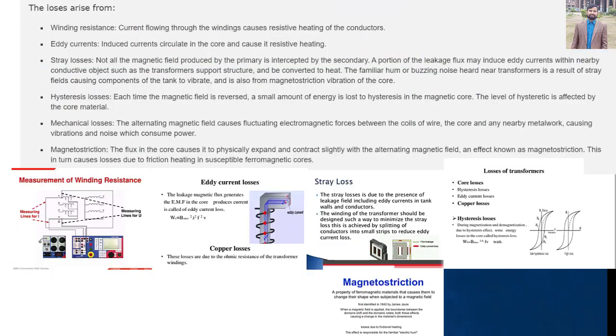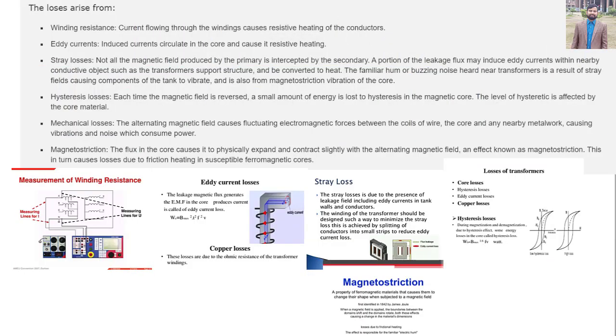The losses arise from winding resistance. Current flowing through the windings causes resistive heating of the conductors. Eddy currents: induced currents circulate in the core and cause resistive heating. Stray losses: not all the magnetic field produced by the primary is intercepted by the secondary.